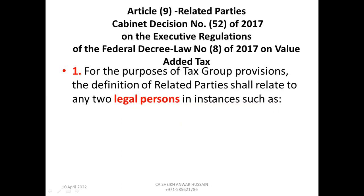In this video we will basically talk about Article 9 — related parties. In Cabinet Decision number 52 of 2017, for the purpose of the tax group provisions, the definition of related parties shall relate to any two legal persons. They are talking about legal persons only, not individuals or sole establishments. Two legal persons — mainly two companies — can form a tax group.